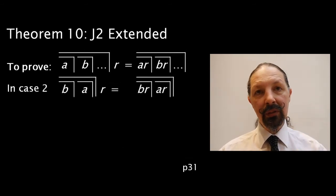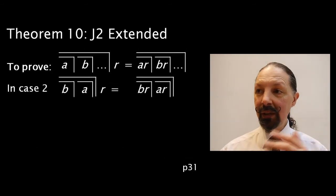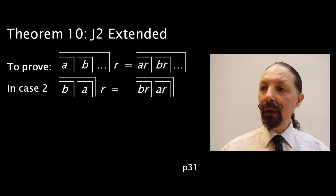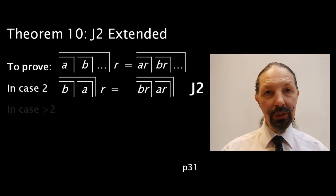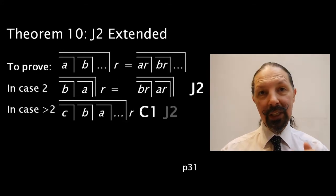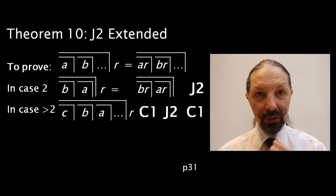Now, if there are two subdivisions of a space, then it's our old friend J2. If there are more than two, then what we can do is apply a sequence we've met before: C1, J2, C1.